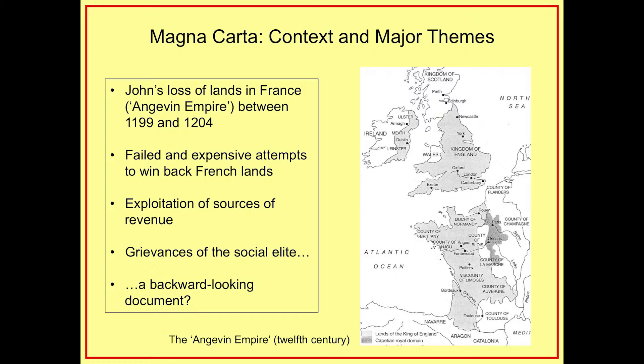A very quick bit of context. Since 1066, England had been joined to the continent. England and Normandy had been joined together politically, and then under John's father, Henry II, in the second half of the 12th century, all of this area in western France — Anjou, Aquitaine — the so-called Angevin Empire of the 12th century, had been added to the rule of the English monarchs. John's brother, Richard the Lionheart, just about managed to keep the whole lot together. But when John came to the throne in 1199, within five years, by 1204, he'd managed to lose almost all of those continental possessions to the resurgent French monarchy under Philip II. John spent the rest of his reign trying to get it all back again, a task at which he failed dismally.